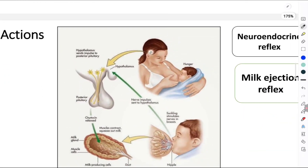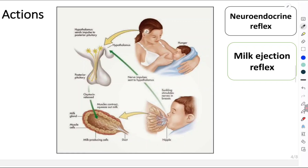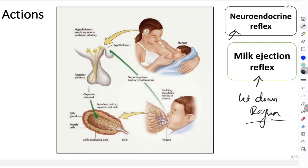Now coming to the most important part of oxytocin — this is a question repeatedly asked in exams — which is called the milk ejection reflex, also called the neuroendocrine reflex, or the let-down reflex. Any of the three names can be asked, so remember all three: milk ejection reflex, neuroendocrine reflex, or let-down reflex.